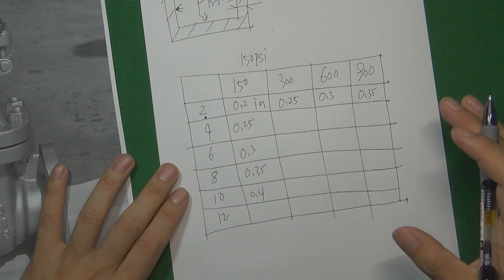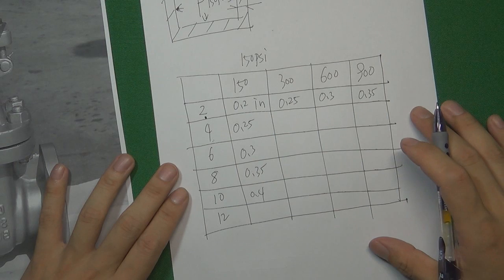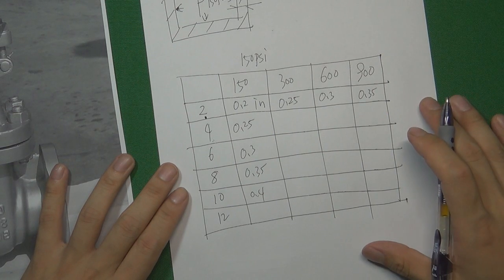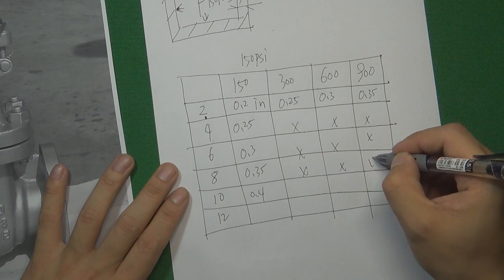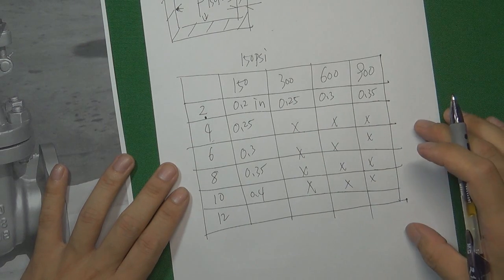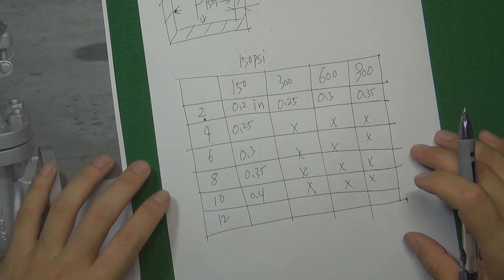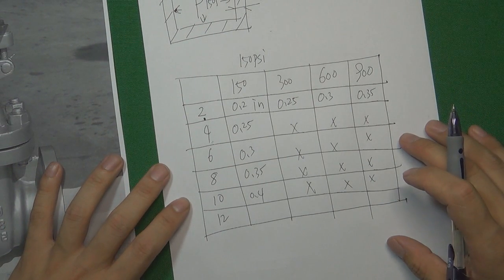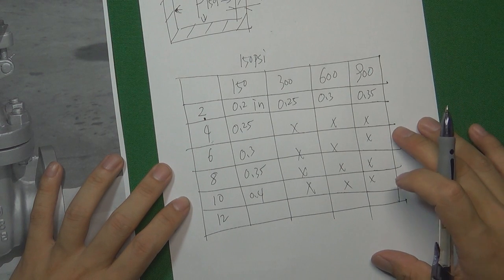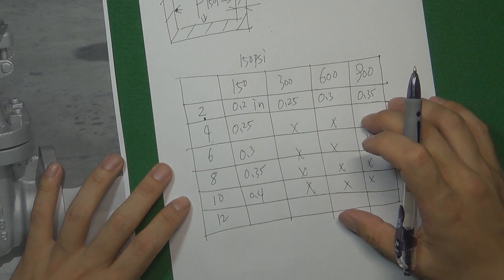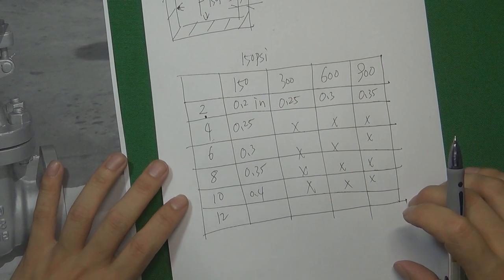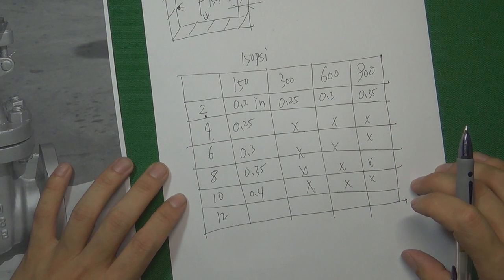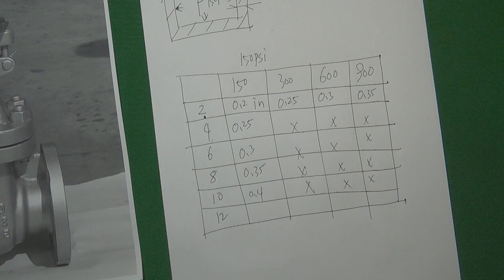Finally, after a lot of tests and calculations, the pioneer engineers were able to design a very detailed table with precise wall thickness values. When the valve design engineer is going to design a valve, they can use this table to find the right wall thickness to design a very safe valve. Let's look at the real valve body wall thickness table in ASME B16.34.